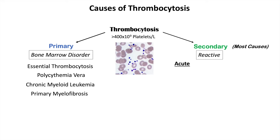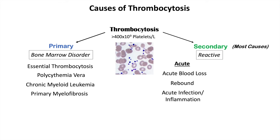Secondary thrombocytosis can be broken down further into acute and chronic causes. Acute causes include acute blood loss and rebound thrombocytosis — for example, following bone marrow suppression from an infection or inflammation, platelet production can rebound when that trigger resolves. Acute infection and inflammation can also raise platelet count, as platelets are often an acute phase reactant. Another acute cause is alcohol cessation: individuals with prolonged heavy alcohol use who stop can experience a rebound-type secondary thrombocytosis with very high platelet levels.